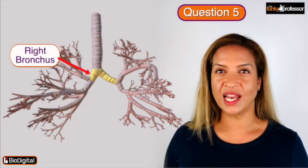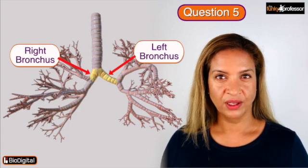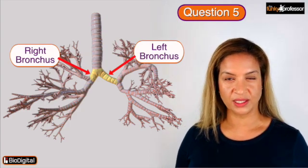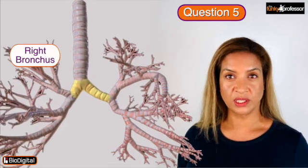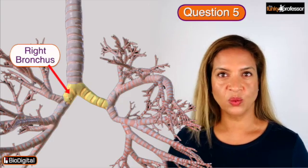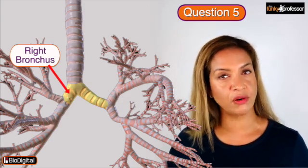Question 5 is the right and left bronchus, which are a direct continuation of the trachea. The bronchi transmit air into the lungs for gaseous exchange to take place. The right bronchus, as you can see, is shorter and wider and is more vertically placed, which means this is usually the bronchus in which foreign objects can get stuck if they're inhaled by mistake.